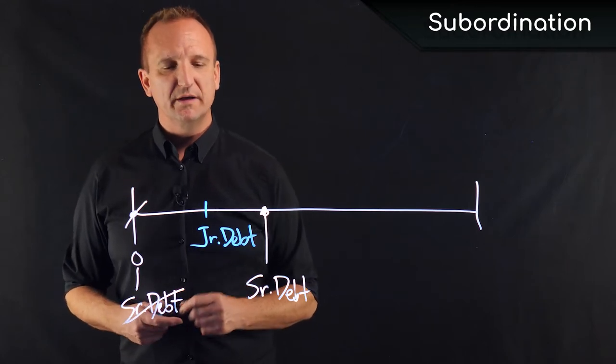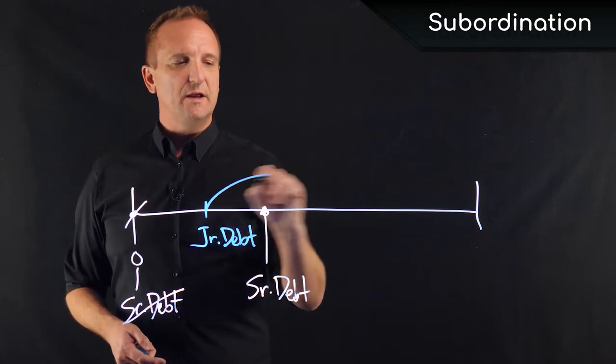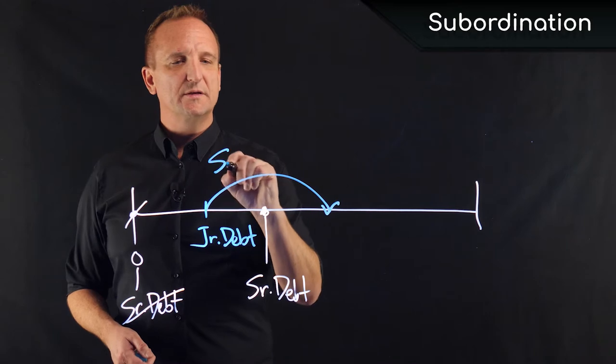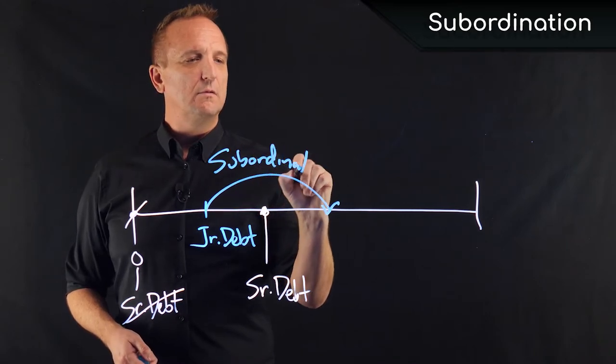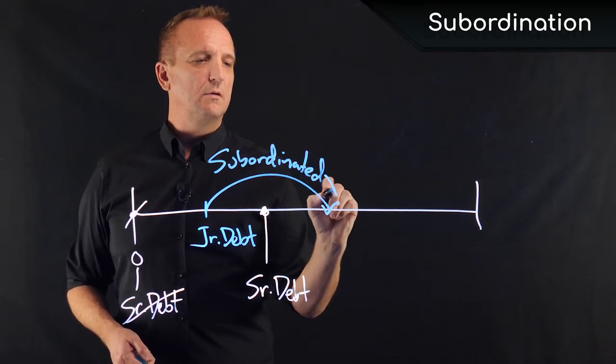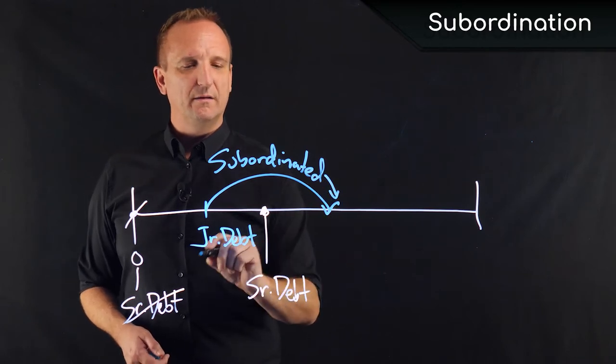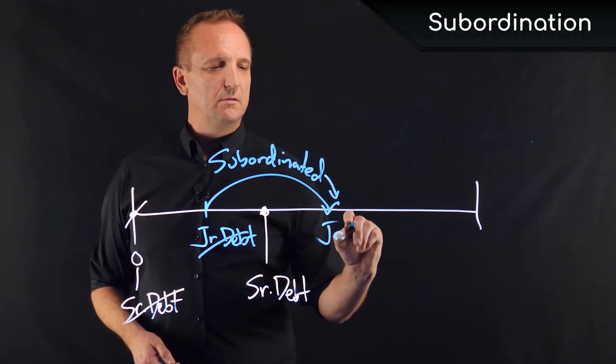So effectively what would happen is the junior debt holder's claim would now be subordinated behind the senior debt.